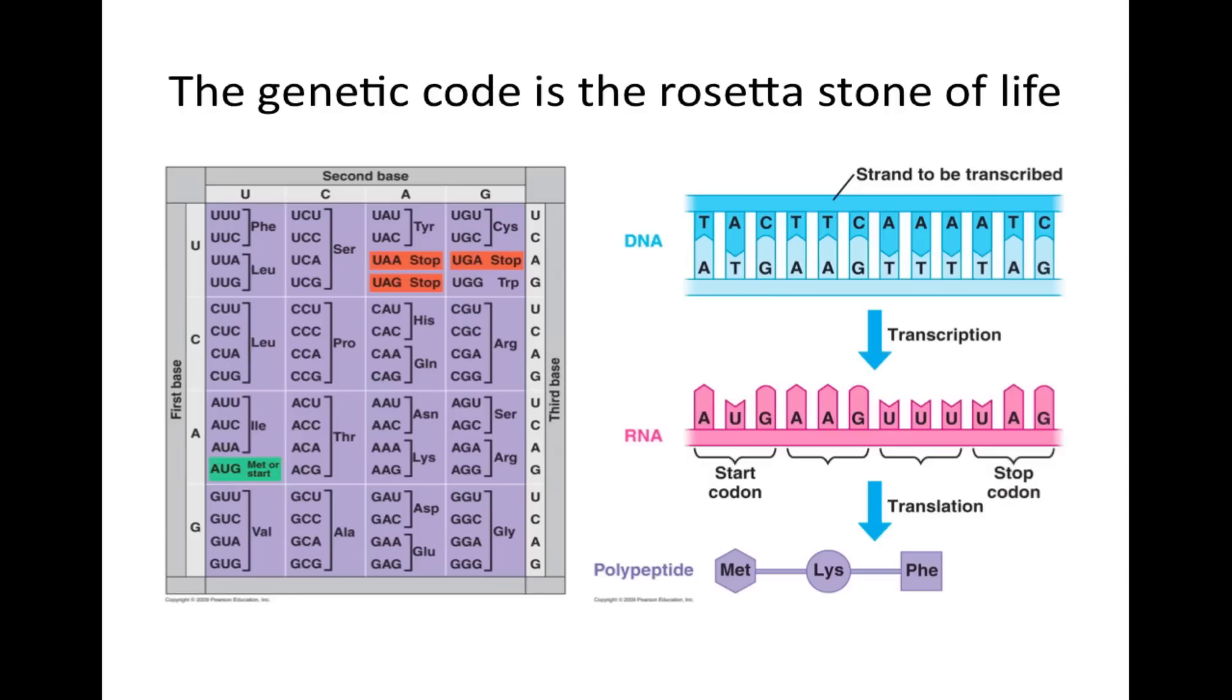The genetic code is the Rosetta Stone of Life. The start codon is the base sequence AUG, and the table on the left translates the AUG sequence as a MET amino acid. All codons are translated similarly.